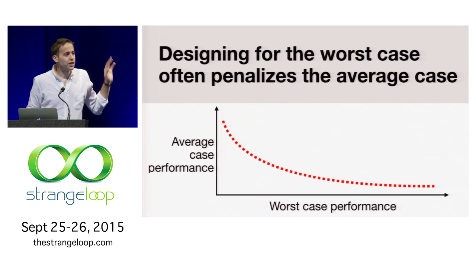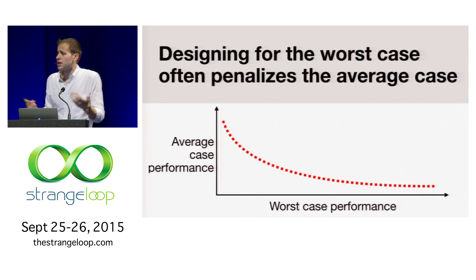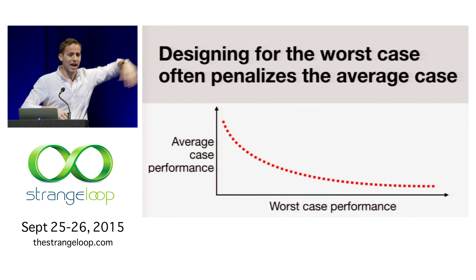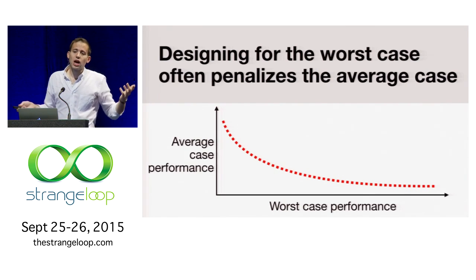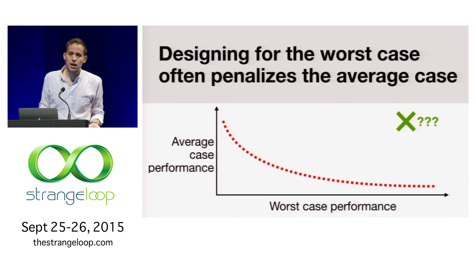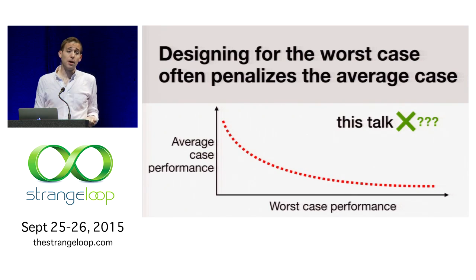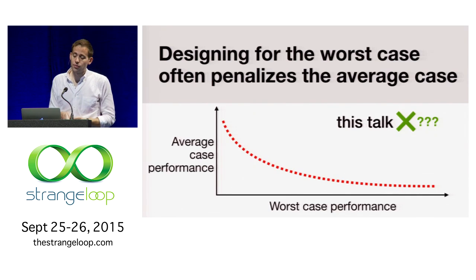So the question is: if this is a dismal trade-off where the more worst case behaviors and environmental conditions we want to account for, the worse we perform in the average case when bad things don't happen — in this talk I want to ask what would it mean to break this curve, to get the best of both worlds, whereby designing for the worst case we can actually improve the average case as well.